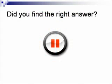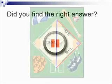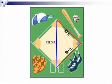Did you find the right answer? Pause the video now and discuss how you solved this problem with a partner. The right triangle formed from home plate to second base has a hypotenuse of 127.3 feet. This is the distance a catcher would throw from home plate to second.